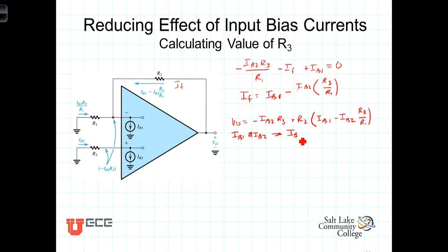So we're just going to replace each of those terms with the average I sub B. And when we do that, we can factor out that I sub B, and we get that Vout is equal to I sub B times R2 minus R3 times 1 plus R2 over R1. And you can stop the video and go through and prove that that's correct.